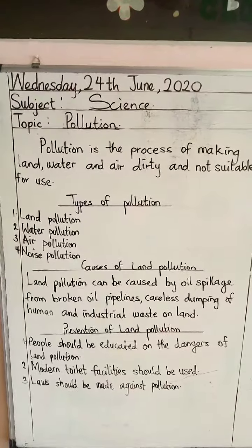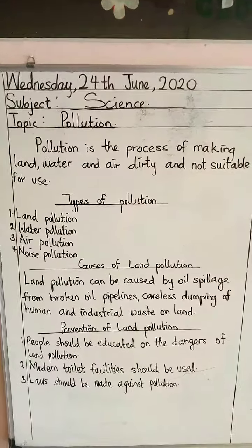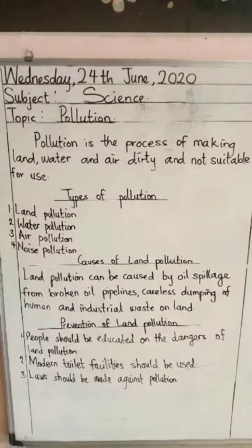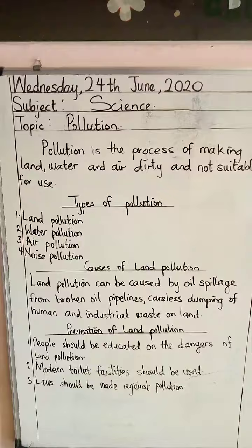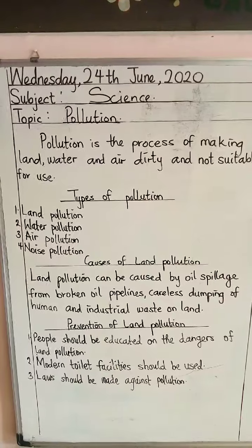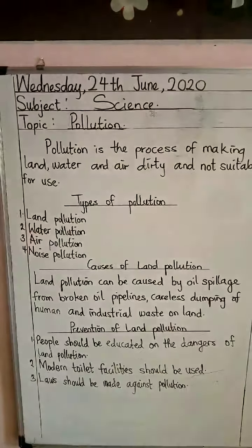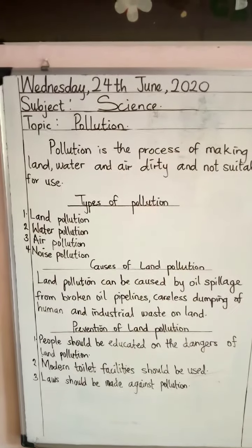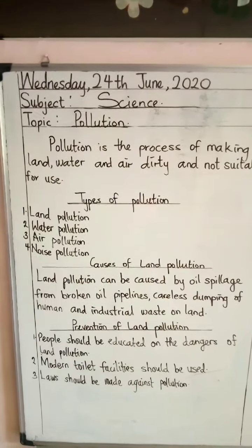Land pollution can be caused by oil spillage from broken oil pipelines, and by careless dumping of human and industrial waste on land. Oil from industries can make your land not suitable for use — if you spill oil on your land, you cannot plant on it and good crops will not grow. When you dump refuse from your home on land, it also makes it not suitable for use and spoils and kills the nutrients in that land.